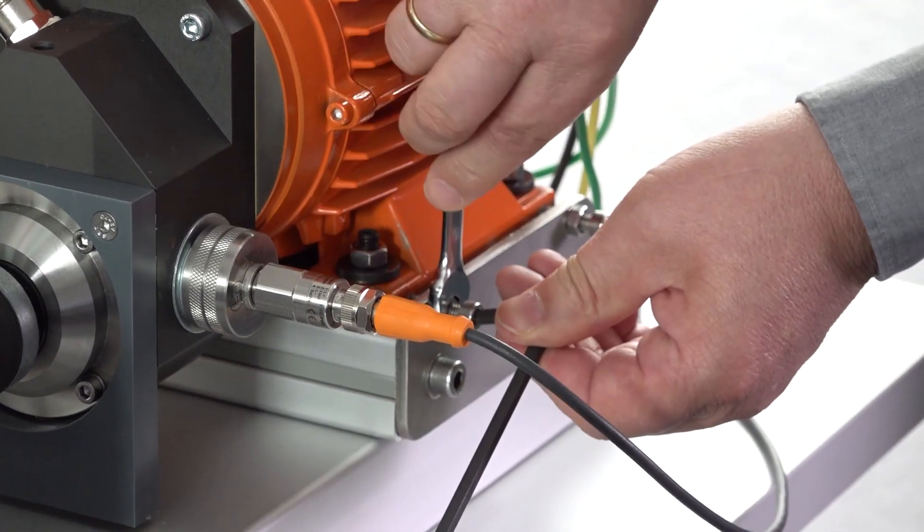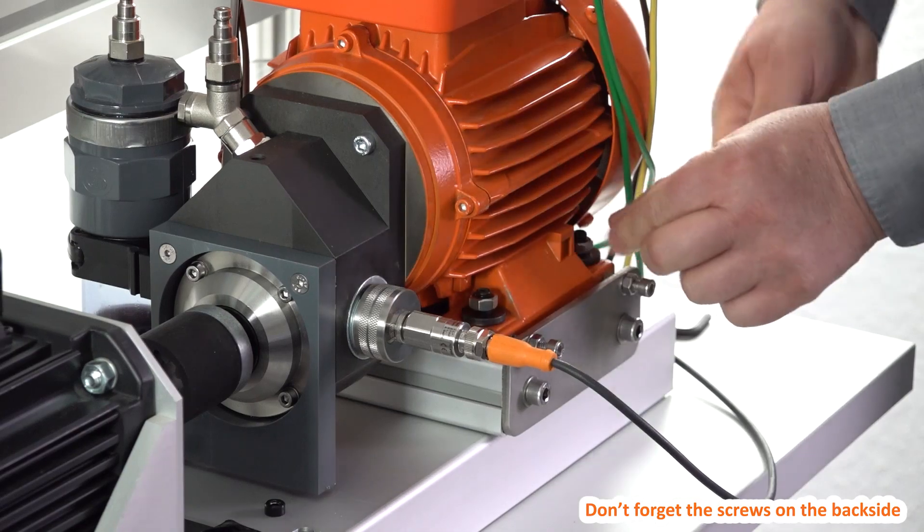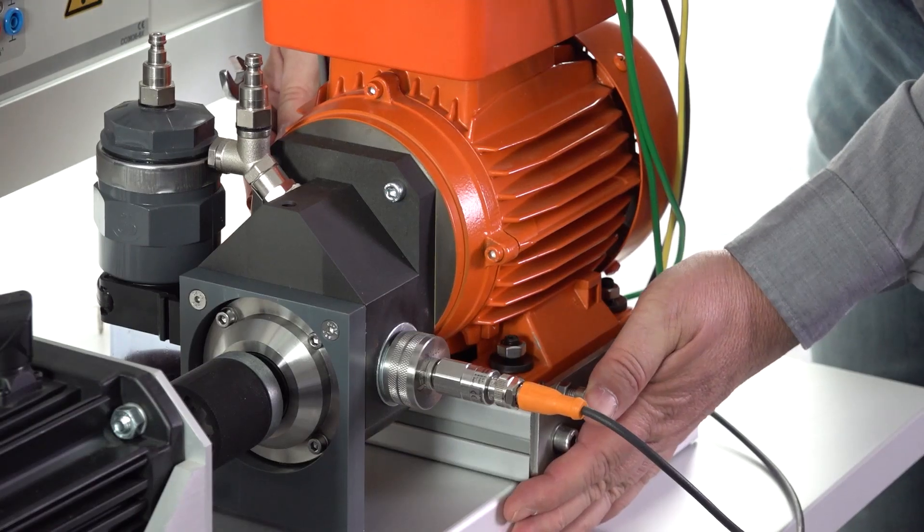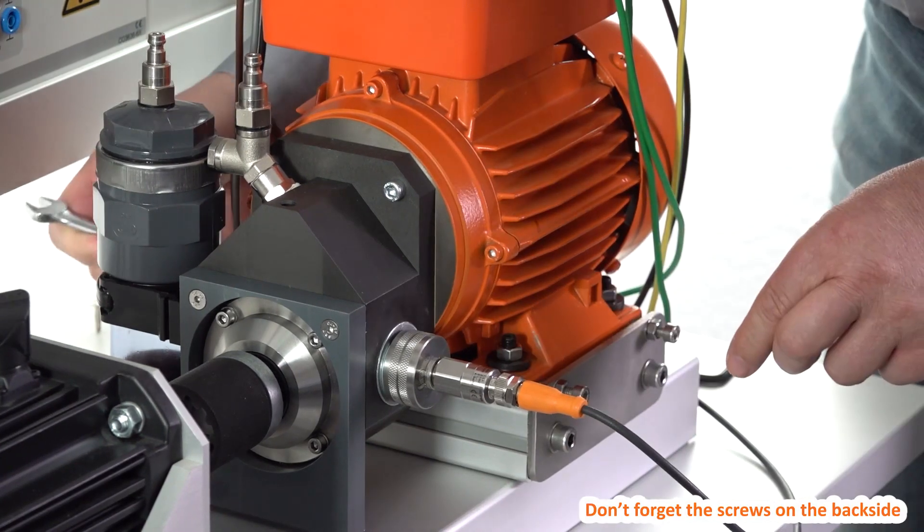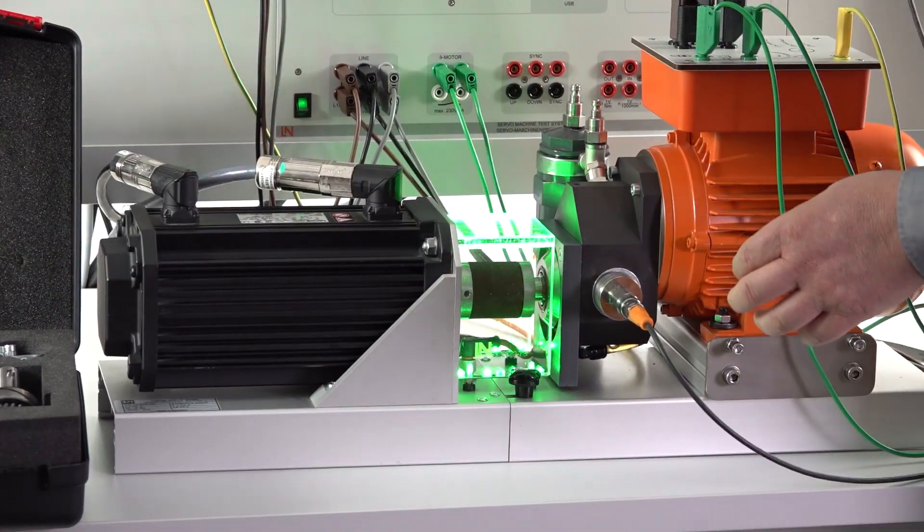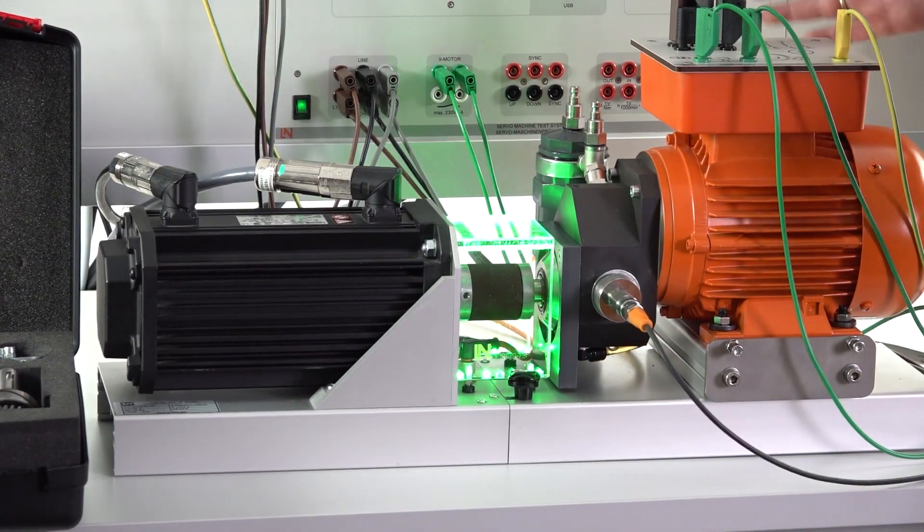So the next step is to open the bottom screws for the motor. And now I can move the motor from the right side to the left side. Fix the motor again. And now the system is prepared for misalignment testing.